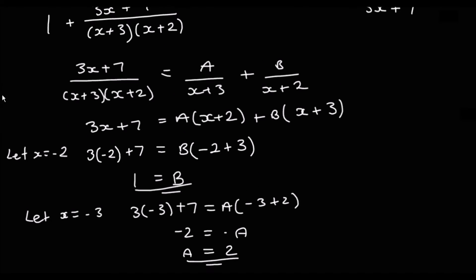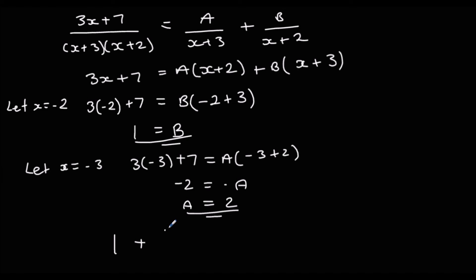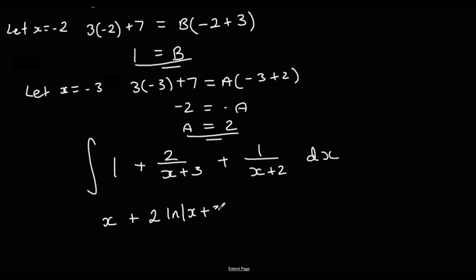Don't forget the 1. We now have 1 plus 2 over (x plus 3) plus 1 over (x plus 2), and we can integrate that. Integrating 1 gives x; then 2 ln(x plus 3), dividing by the bracket differentiated which is 1, plus ln(x plus 2), plus c.